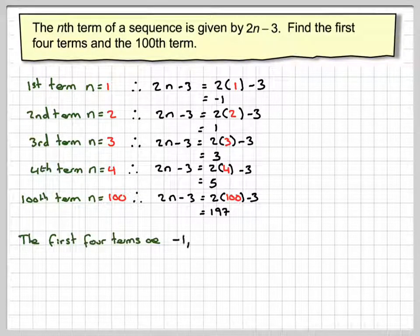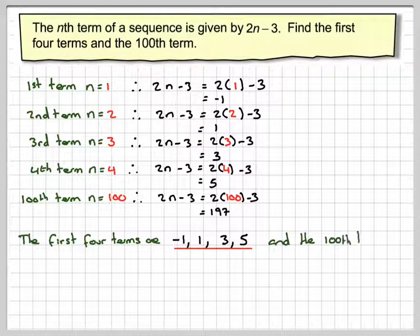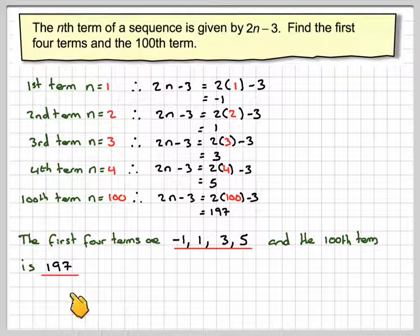Therefore, the first four terms are minus 1, 1, 3, and 5, and the hundredth term is 197.